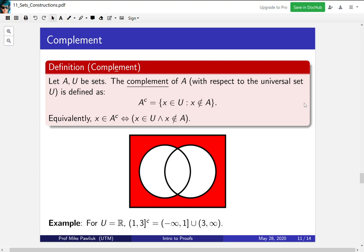The set complement is a little more tricky because it involves the set U. So let A and U be sets. The complement of A with respect to this universal set U is defined as all x that are in U that aren't in A. And this is why we have to introduce this universal set U.